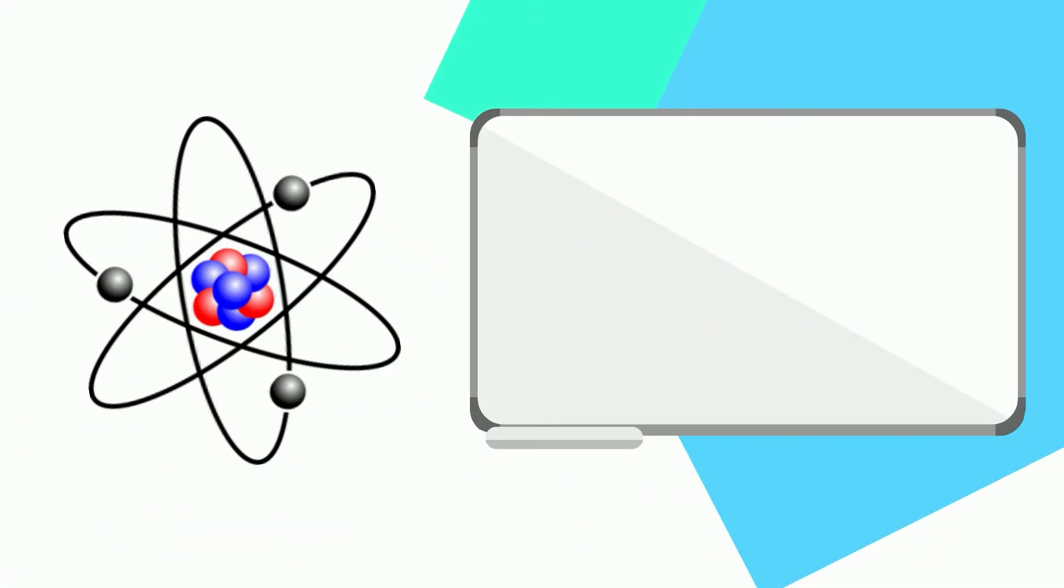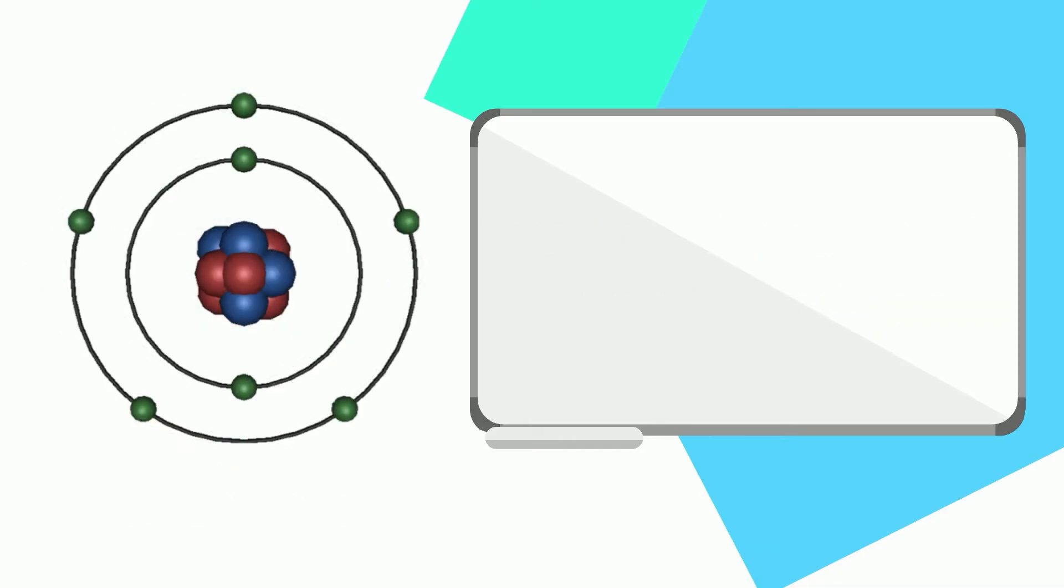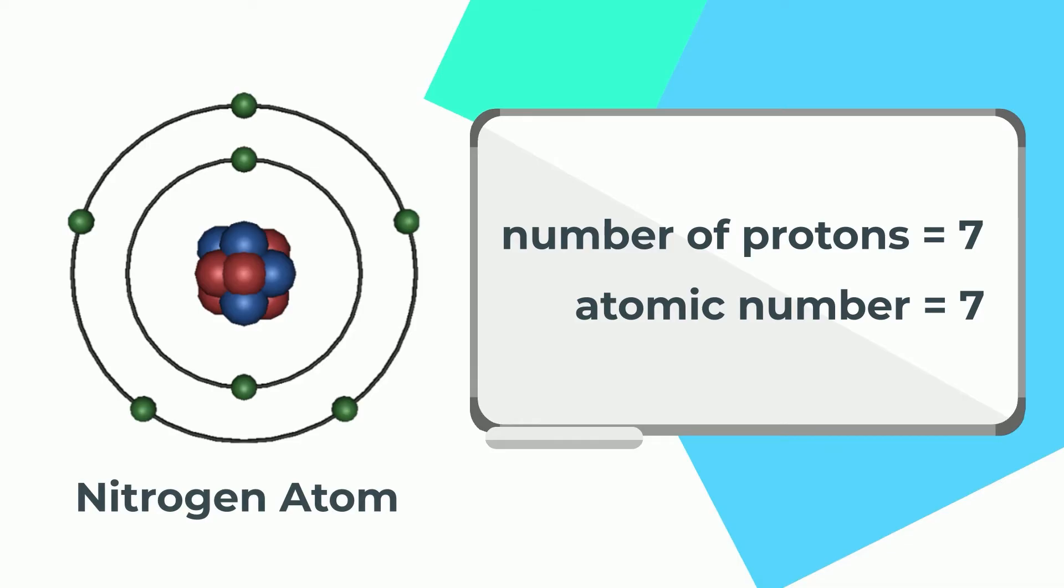In an atom, the number of protons is similar to the atomic number all the time. Changing the number of protons changes the identity of the element. For instance, carbon has 6 protons, therefore has atomic number 6. Adding one proton changes the element to nitrogen.